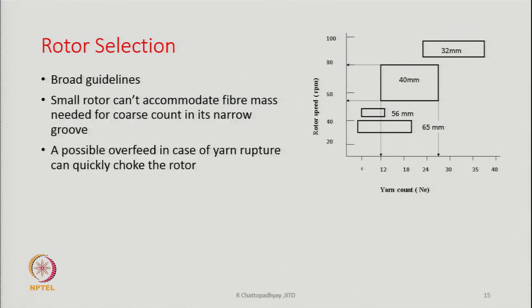The broad guidelines for selection are: a small rotor cannot accommodate the fiber mass needed for coarse count in its narrow groove. When you try to spin coarse count, you will have more fibers in the cross section of the yarn, which will also be in the groove of the rotor. So with a small rotor, a large number of fibers cannot be accommodated because the grooves are narrower.